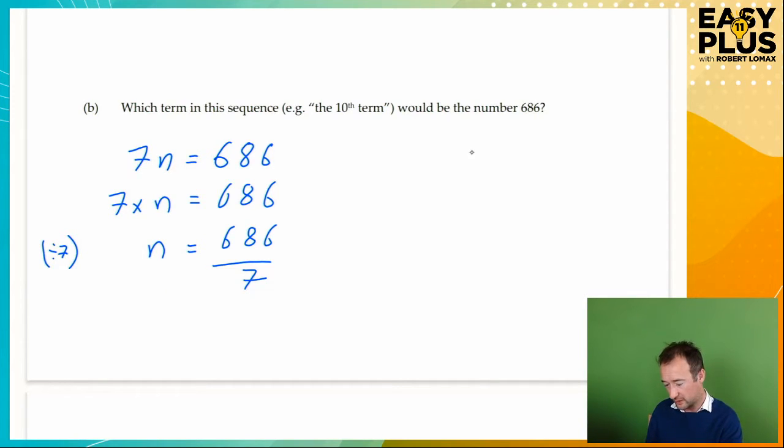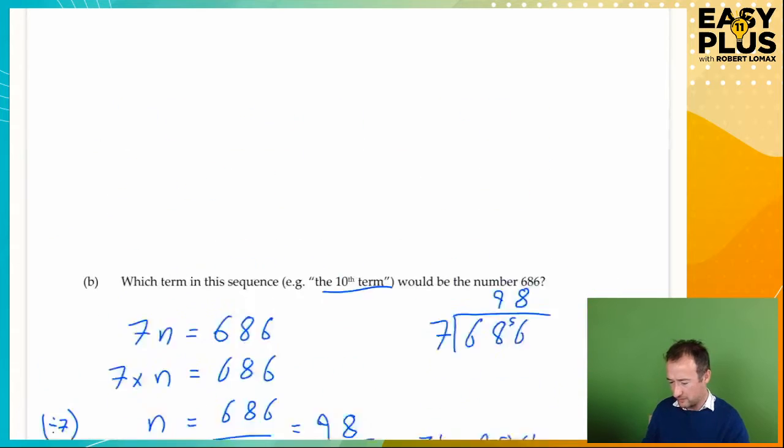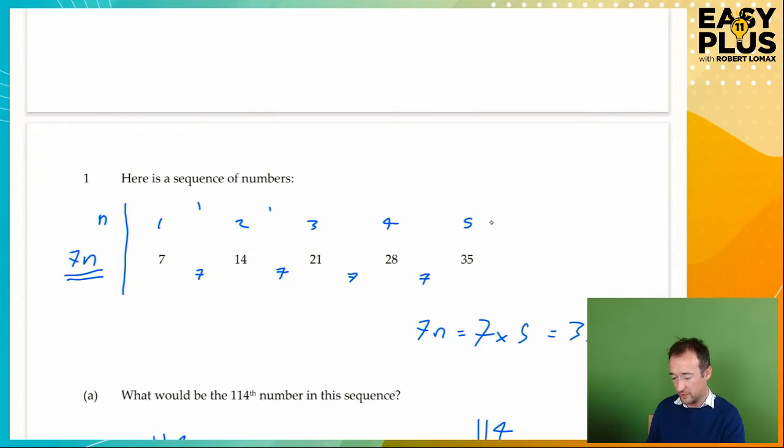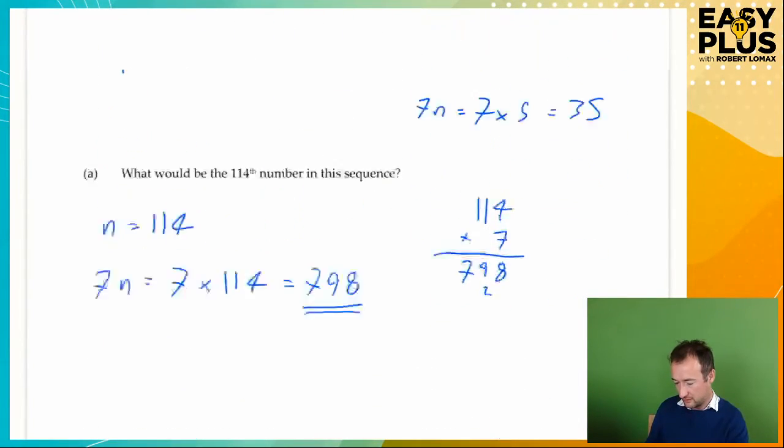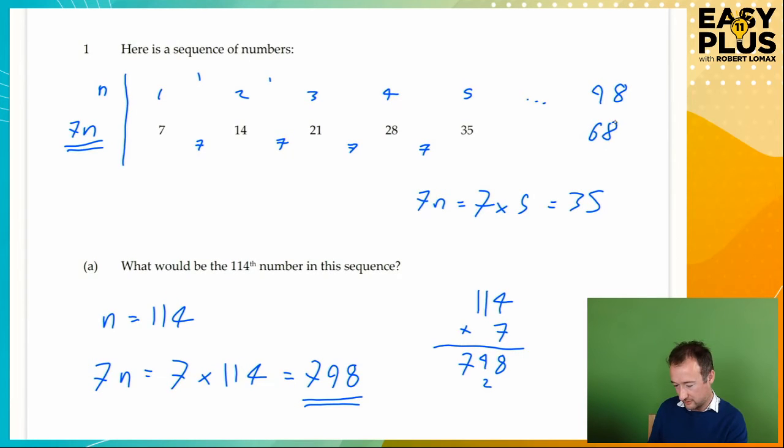Even if you aren't good with algebra, just apply your mathematical common sense. So 7 lots of n is 686. So dividing that by 7, 1 lot of n must be a seventh of 686. 686 divided by 7, because remember the fraction bar or vinculum means divide by. Let's get our working well out to the side. So the answer is 98. So which term? 98. Or the 98th term. When we get to term 98, it's going to be 686.